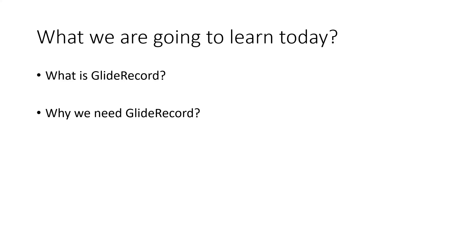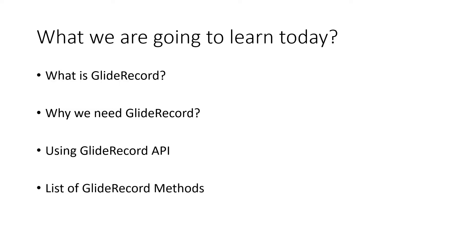We would see why we need GlideRecord — after understanding what it is, we'll understand why we actually need it. Then we'll cover using the GlideRecord API: how to declare GlideRecord, how to access different methods, and how to initiate objects. Finally, we'll see what list of GlideRecord methods are available. Also, this GlideRecord video will be in two parts — this is the first part; in the next part we'll discuss all the different methods practically inside ServiceNow.